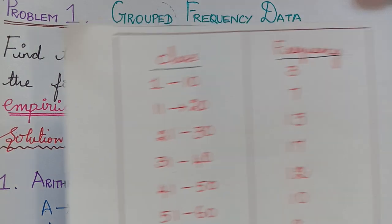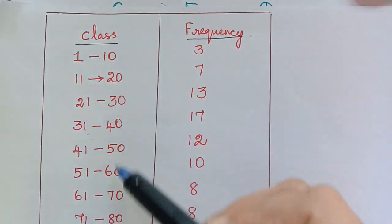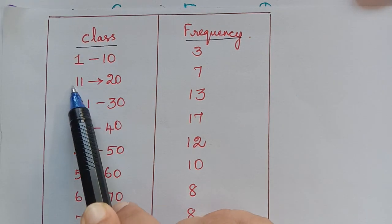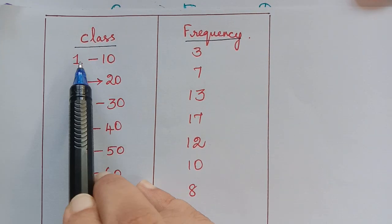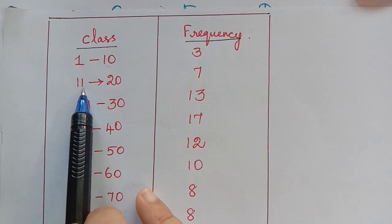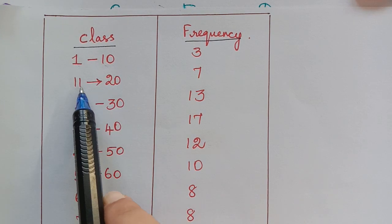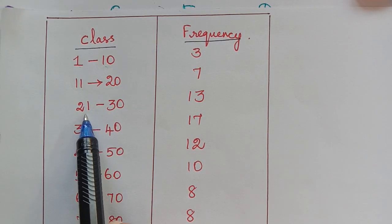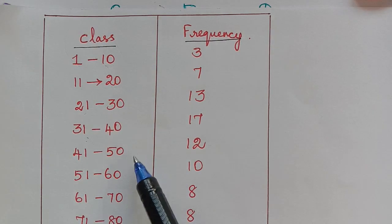As the first step, we have to check the given class intervals. The class intervals should be in such a way that the lower limit of the second interval should be the upper limit of the first interval. Here the first class interval is 1 to 10, so it gets over at 10 and the next interval should begin at 10. But here it begins at 11. Similarly, the next interval ends at 20 but the next one begins at 21.